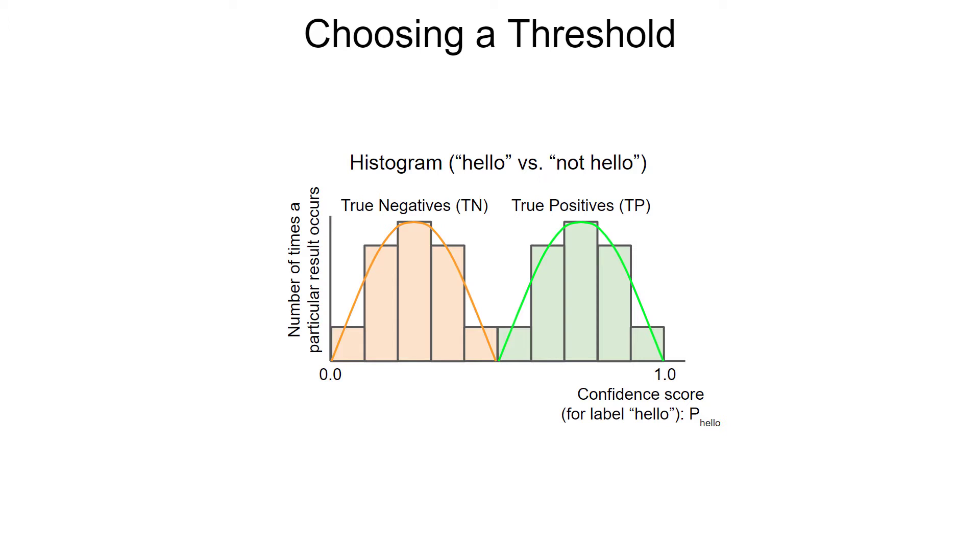What we really care about is the separation between the distributions. If you see obvious separation between these two sets, choosing a threshold is easy. Just pick a number in that separation. For example, in this ideal case, we could just pick 0.5 and be pretty confident that our system would correctly identify our keyword. However, most machine learning applications are rarely ever this neat and orderly.